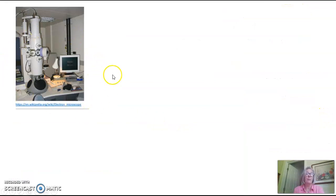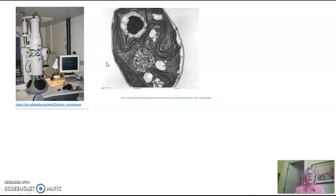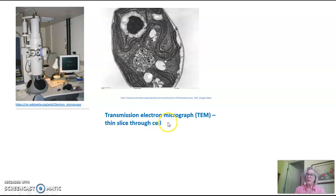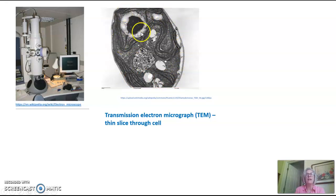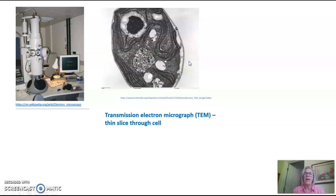Electron microscopes look a little more like computers than microscopes, but they produce amazing images. There are two different types. This is a picture from a transmission electron microscope, abbreviated TEM, where you get an extremely thin slice through a cell. You can see the cell membrane and individual organelles inside the cell. It's incredibly detailed, but again, this cell is dead because it had to be encased in plastic, put in a vacuum, and stained with heavy metal.